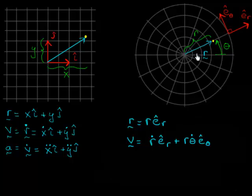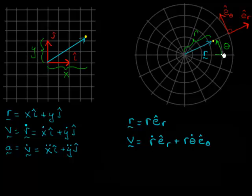In the previous video, we talked about writing position and velocity in polar coordinates — coordinates with this nice circular symmetry. We had basis vectors e-hat-r pointing radially outward, and e-hat-theta pointing perpendicular to e-hat-r in the direction of increasing theta. What we got were two expressions for position and velocity.